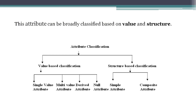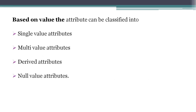Attributes can be classified based on value and structure. Based on value, we can divide attributes into four types: single value attributes, multi-value attributes, derived attributes, and null value attributes. Based on structure, there are two types: simple attribute and composite attribute.